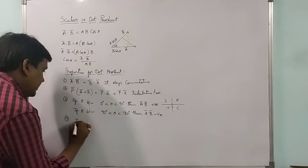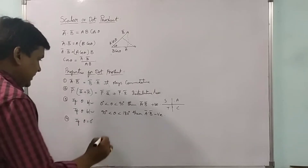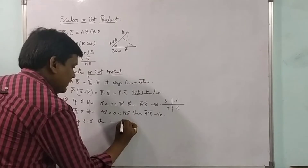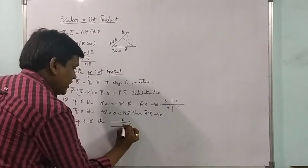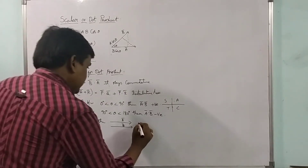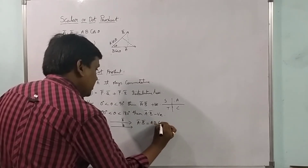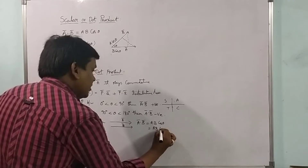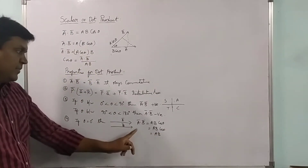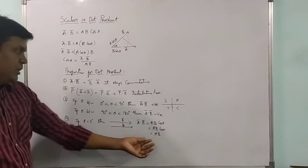Next, if theta equals 0 degrees — that means vectors a-bar and b-bar are parallel to each other — then a-bar dot b-bar equals a·b·cos(0) equals a·b. This is the maximum value, and we get a pure magnitude a·b when theta equals zero.